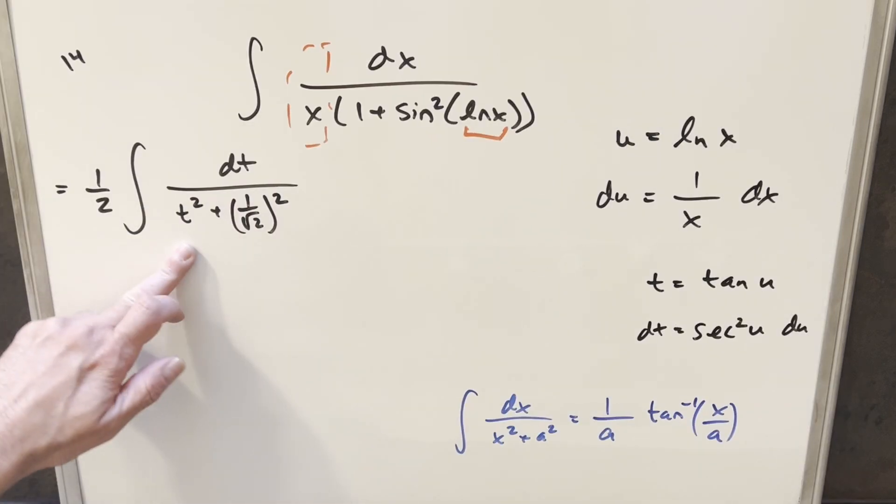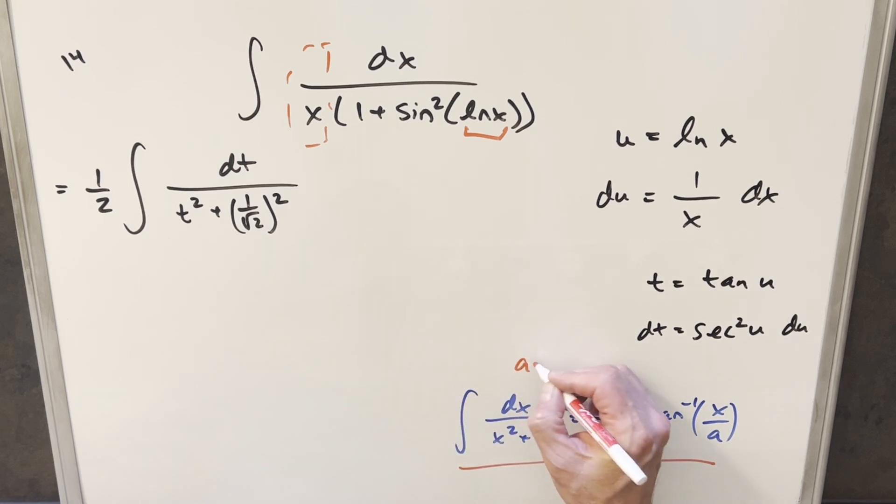But now from here, in order to deal with this integral, we've got our arctan formula over here to the right, where in this case, our a value is going to be just 1 over square root of 2, which is nice because when you take the reciprocal of it, the 1 over a value is going to be just square root of 2.